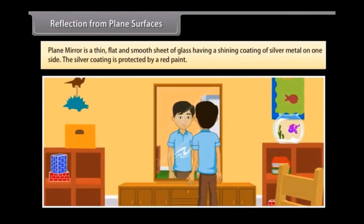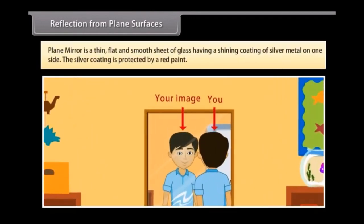Reflection from plane surfaces. A plane mirror is a thin, flat, and smooth sheet of glass having a shining coating of silver metal on one side. The silver coating is protected by red paint.